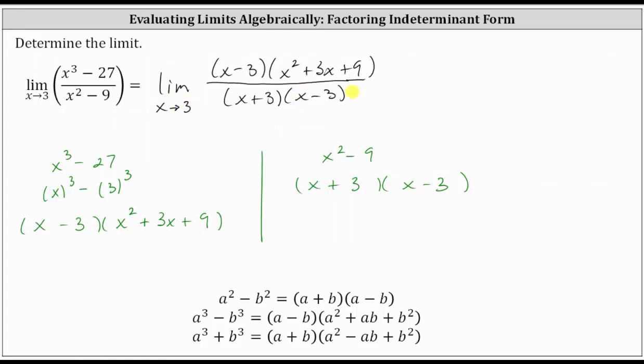Now, looking at the factored form, notice how we have a common factor of x minus three between the numerator and denominator. Graphically, this represents a hole in the graph, but remember, a hole in a graph does not affect a limit, and therefore, we can simplify here and use a simplified rational function to determine the limit.